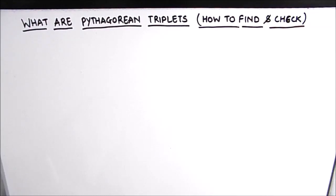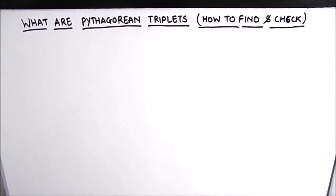Hello everyone. In this video we are going to learn what Pythagorean triplets are, how to find them, and how to check whether three numbers are Pythagorean triplets or not. Pythagorean triplets, as the name suggests, are numbers which follow the Pythagorean law — that means the square of one number is the sum of the squares of the other two.